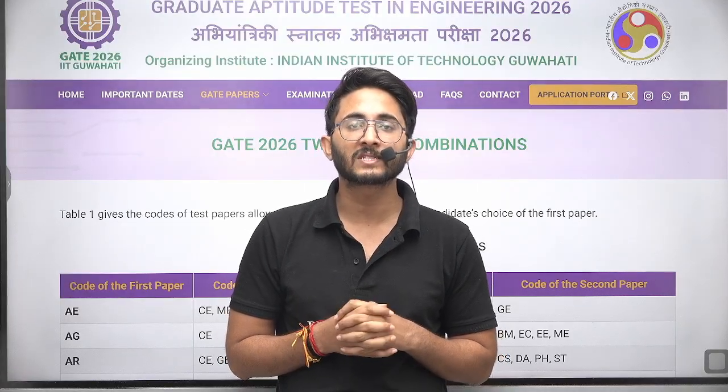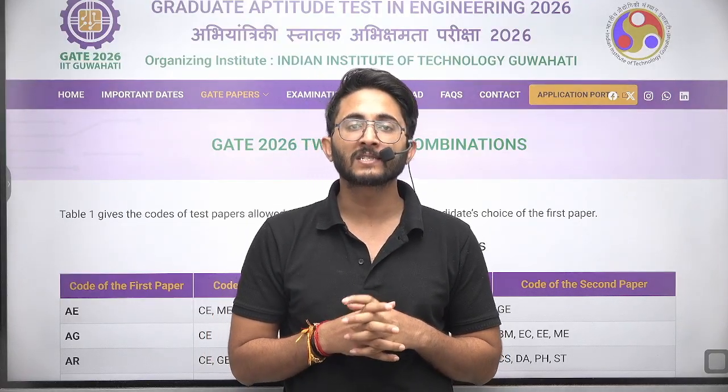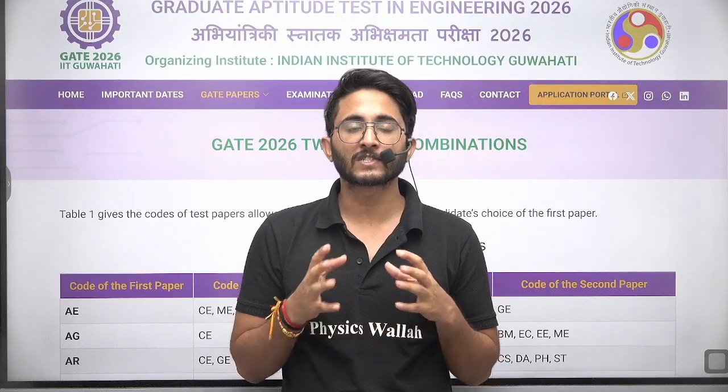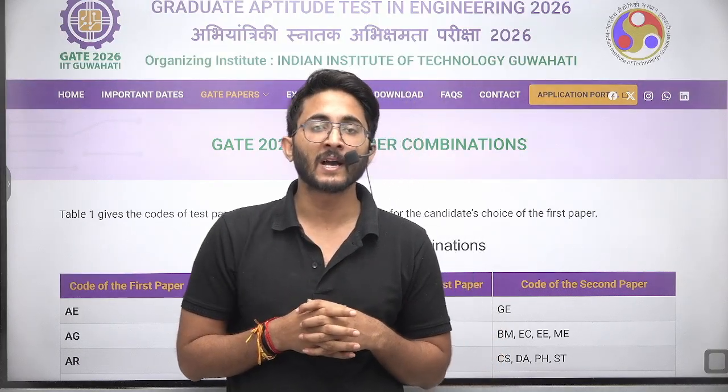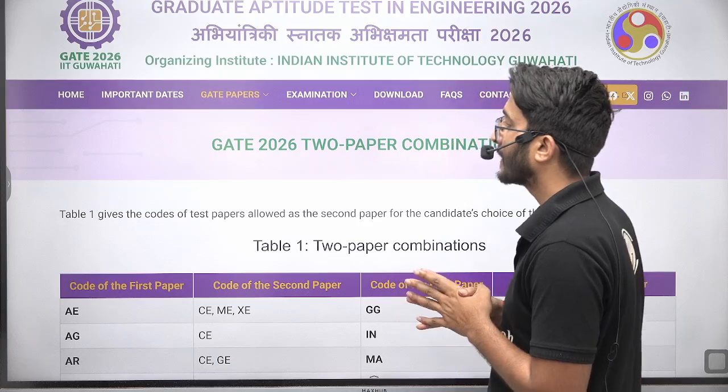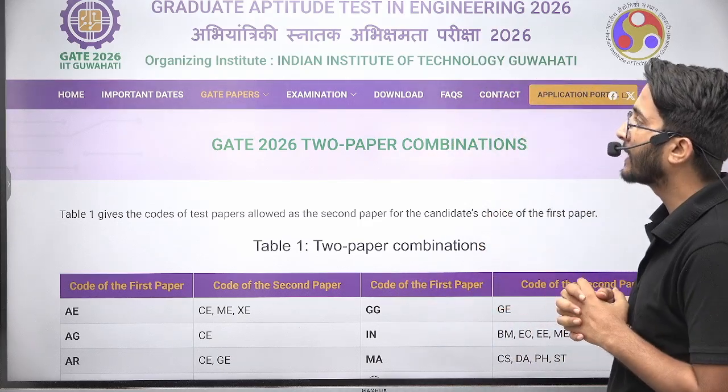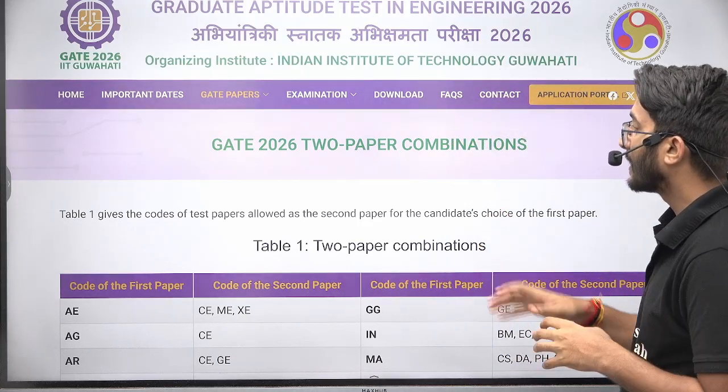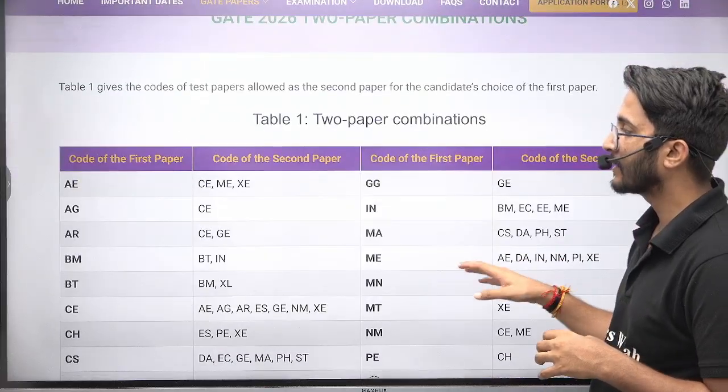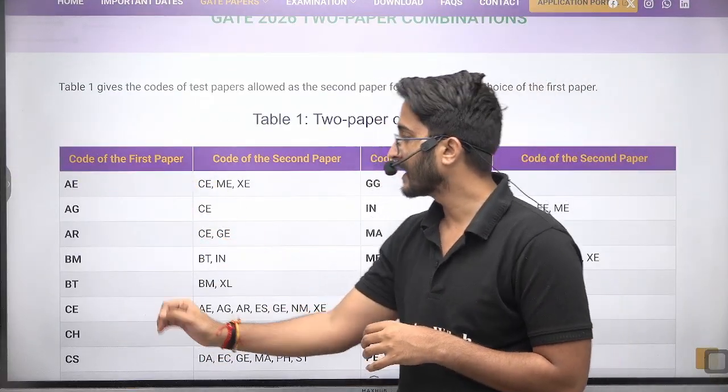So guys, lots of students are going to appear in GATE 2026 and IIT Guwahati is keeping releasing lots of updates for all of you on their official website and we are keeping providing it. If you talk about today's important update, then on the official website of IIT Roorkee GATE 2026, two paper combination is released where the first paper code is mentioned and the second paper code is mentioned.